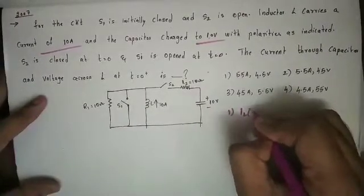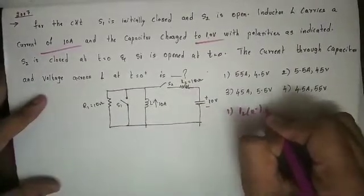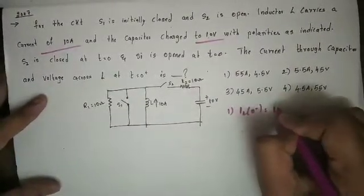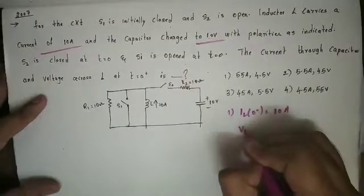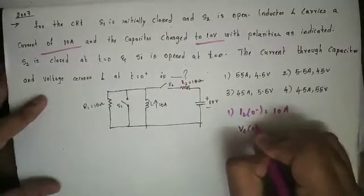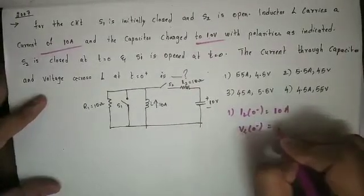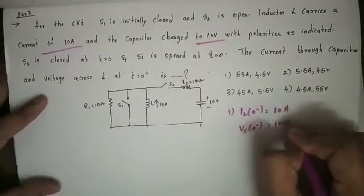The inductor current is 10A and the capacitor voltage is 10V as the initial conditions.